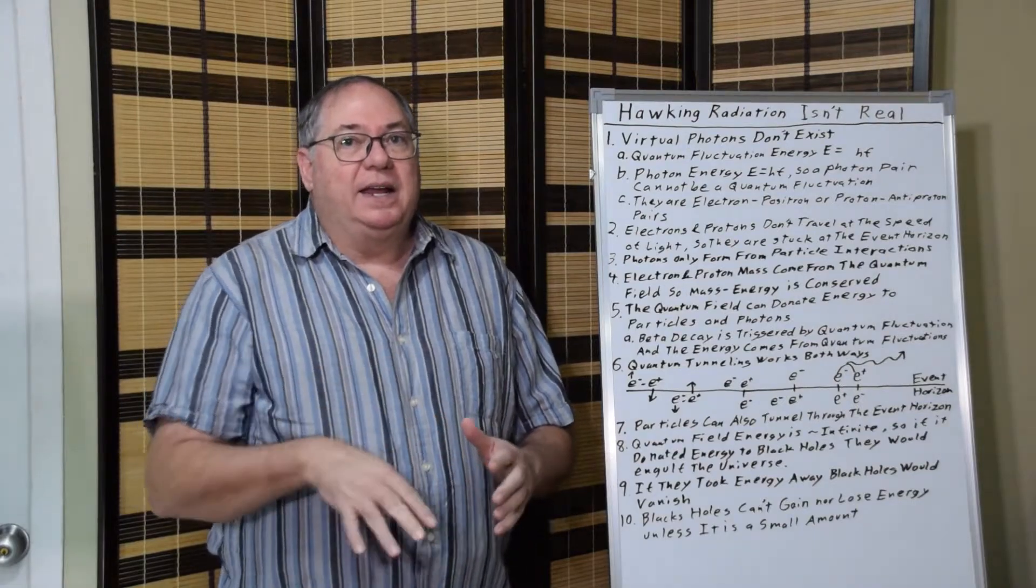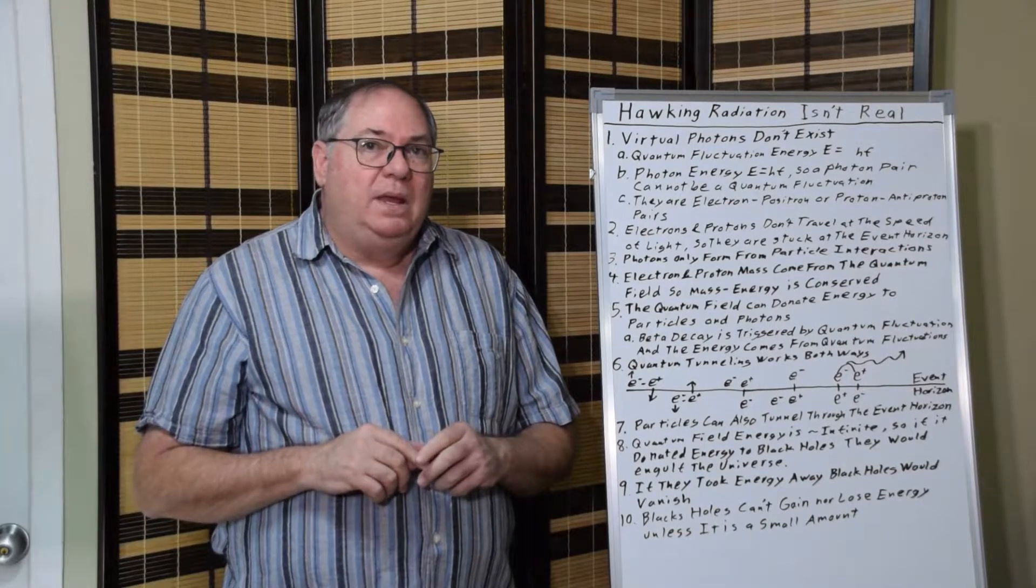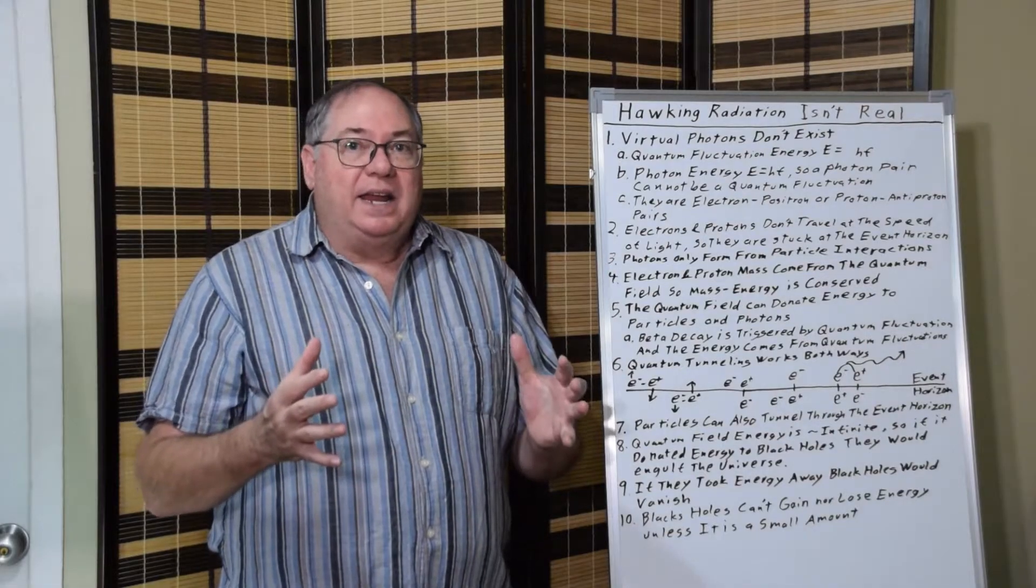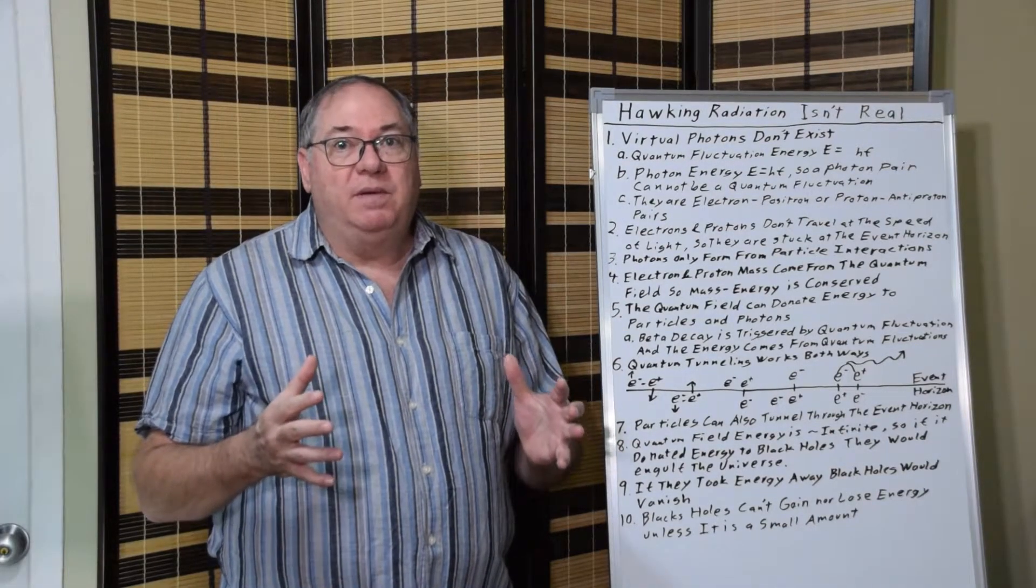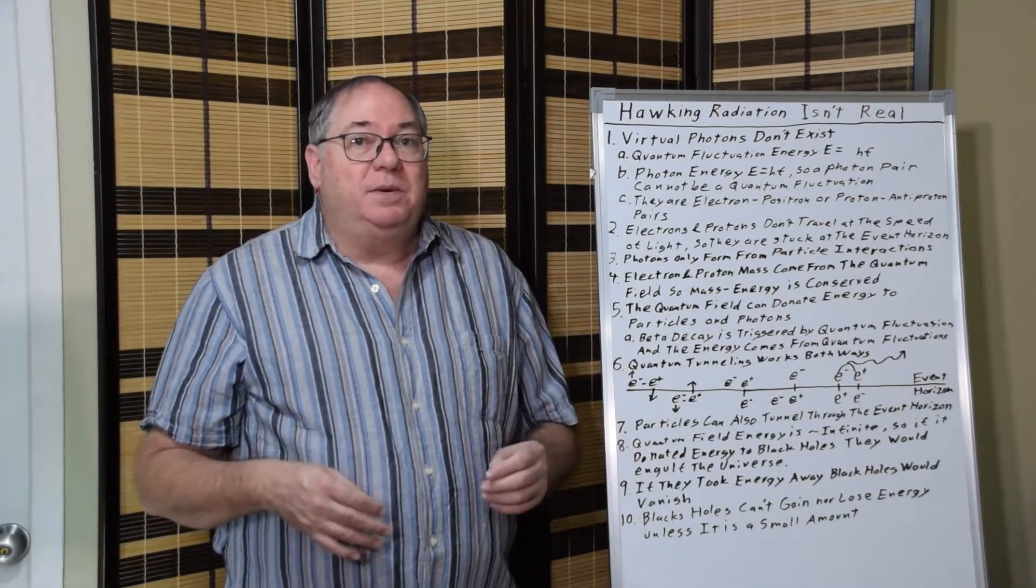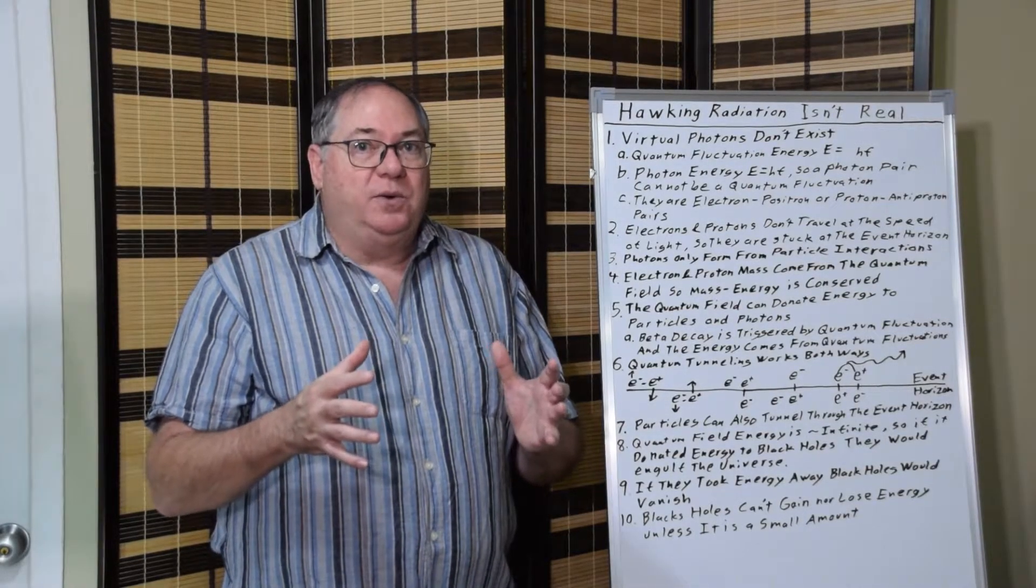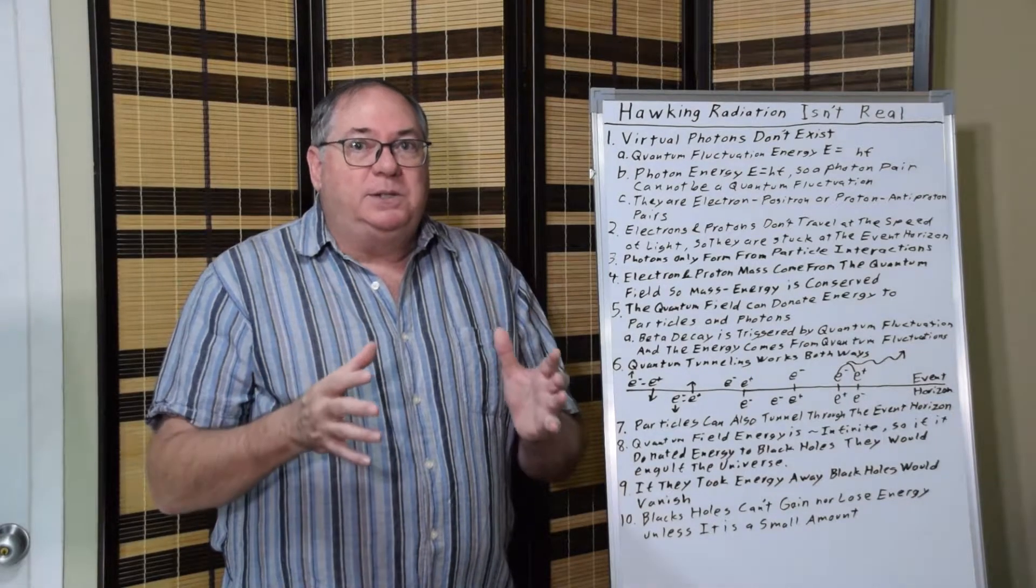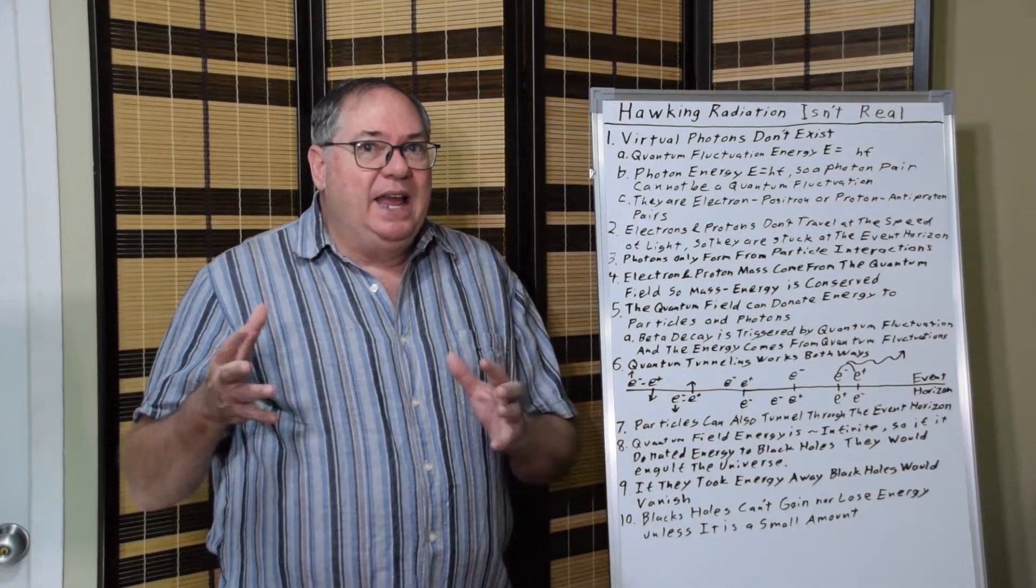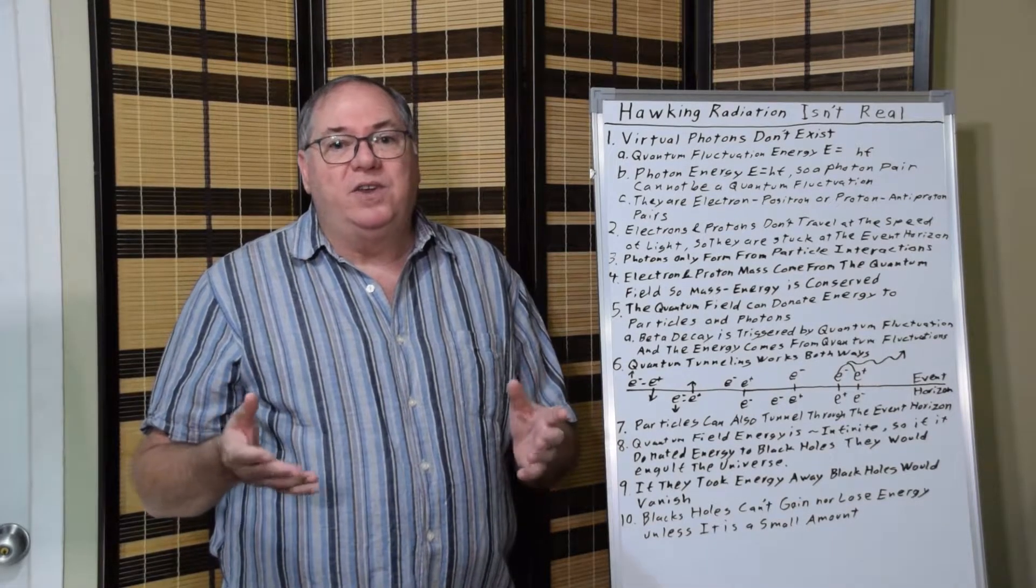And I've done other videos on that I can link to in the description. And the same thing is true with an electron. An electron acts like a shell, a quantum shell, with a Compton wavelength. That's where its magnetic moment comes from, but that's where the mass comes from too. It acts like this shell that produces the magnetic moment also displaces quantum fluctuations. So right there we see a huge error in Hawking's thinking about where the energy comes from.